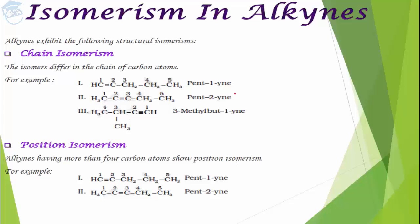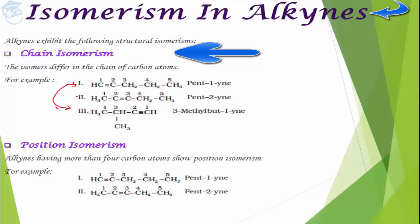Next is isomerism in alkynes. They exhibit chain isomerism, where the number of carbons in the longest carbon chain is different. For example, 1-pentyne and 2-pentyne each have 5 carbons in the longest chain, but 3-methyl-1-butyne has only 4. So 1-pentyne and 3-methyl-1-butyne are chain isomers, and similarly 2-pentyne and 3-methyl-1-butyne are also chain isomers.